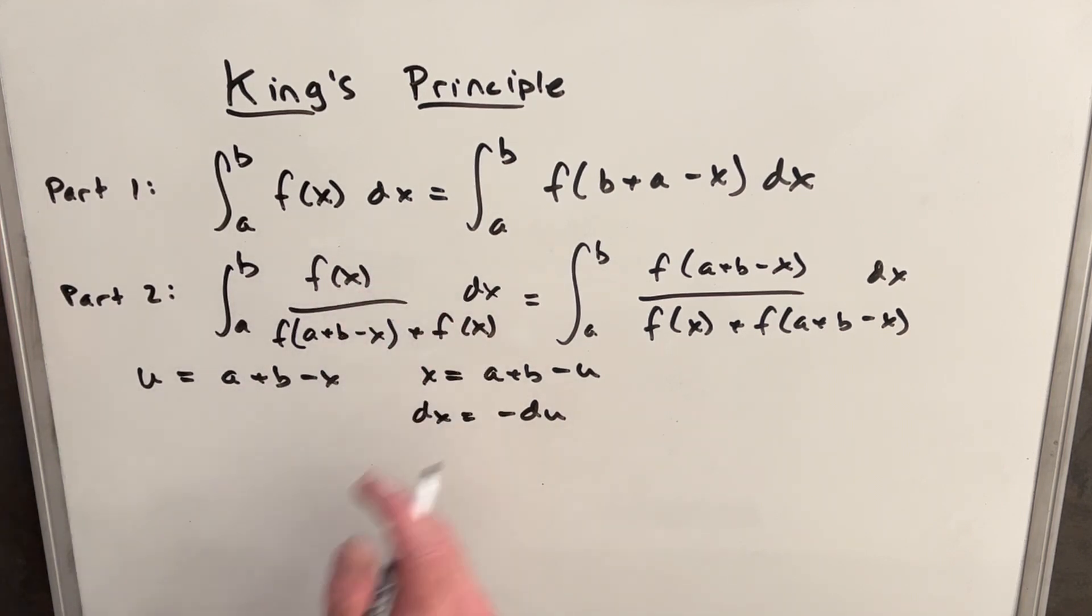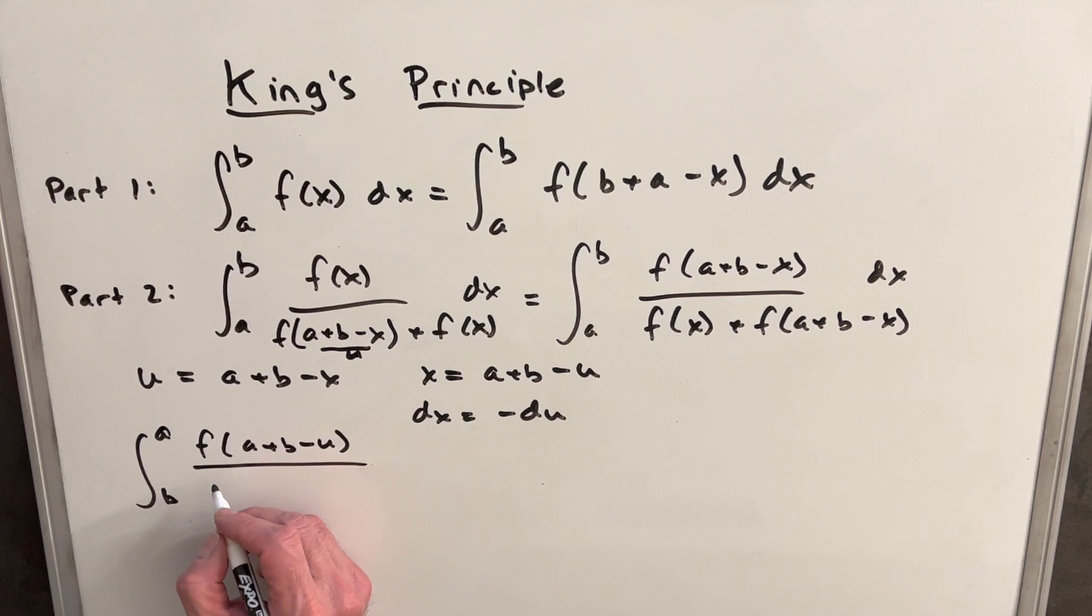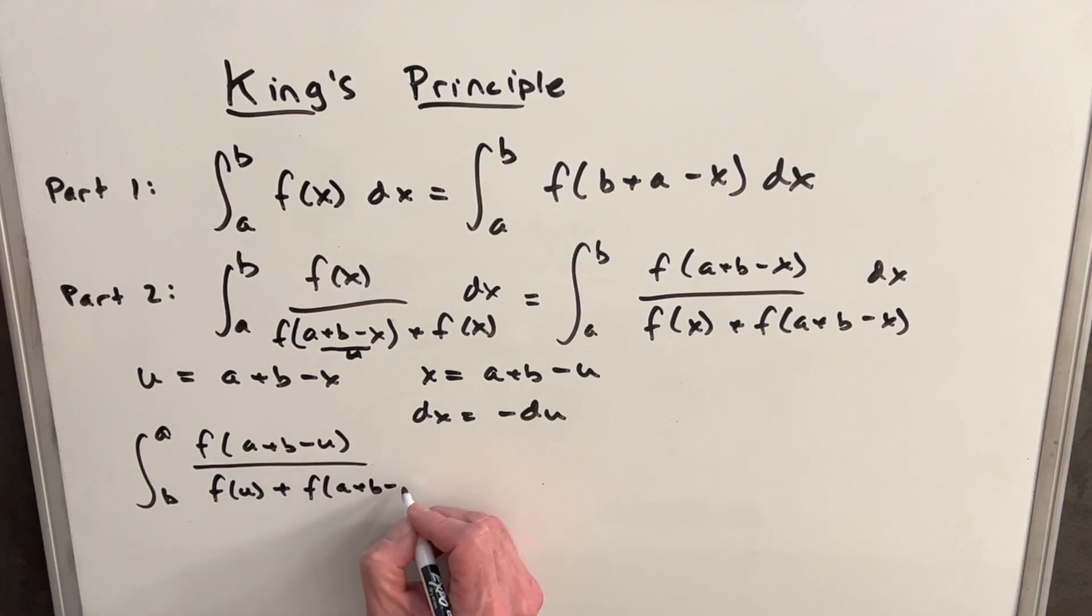So then when we make this substitution in here, notice this piece here is actually our u. So then we're going to swap our bounds again through the same substitution, so we're going to go from a to b. Our f(x) is going to be f(a + b - u). I just changed the order. It could be b + a - u. Obviously, it's commutative. And then this one's going to be f(u), and this one's going to be f(a + b - u) du.